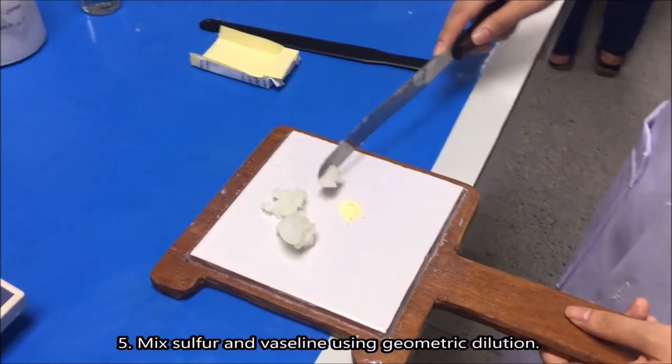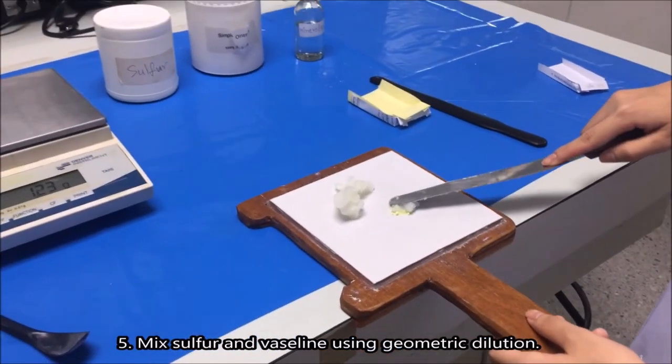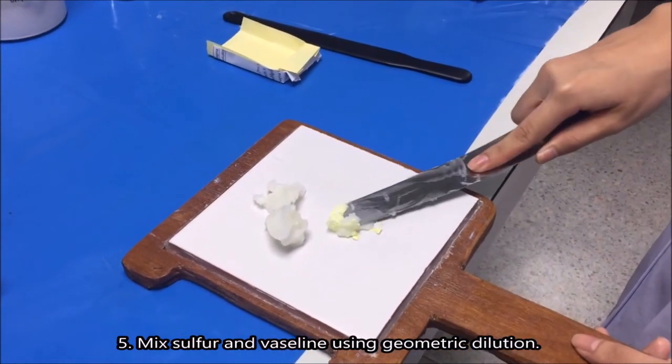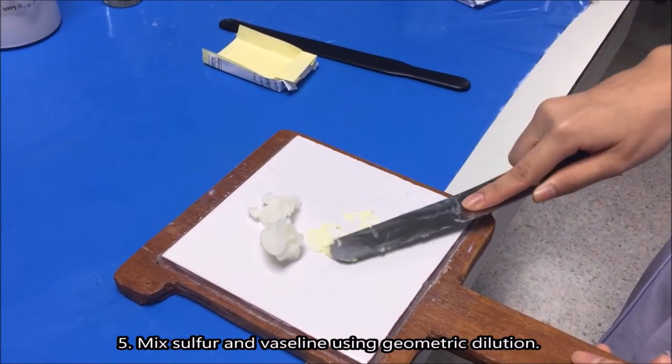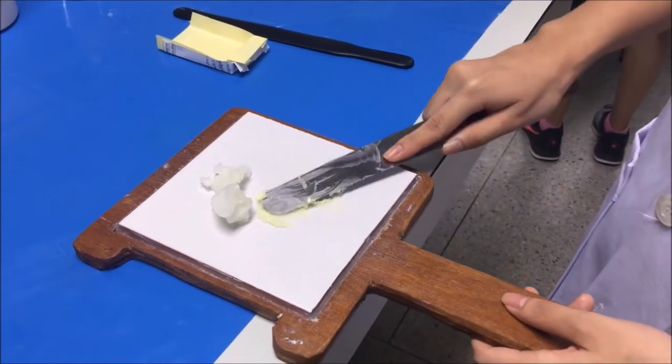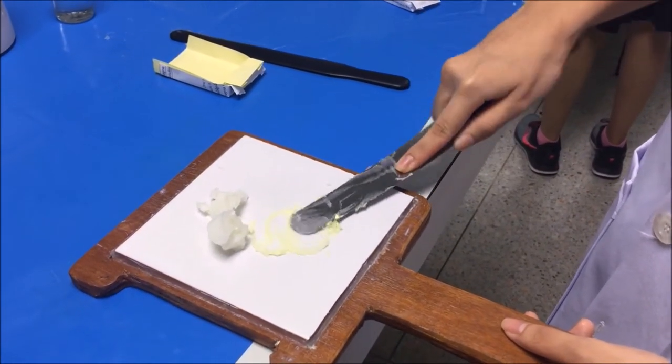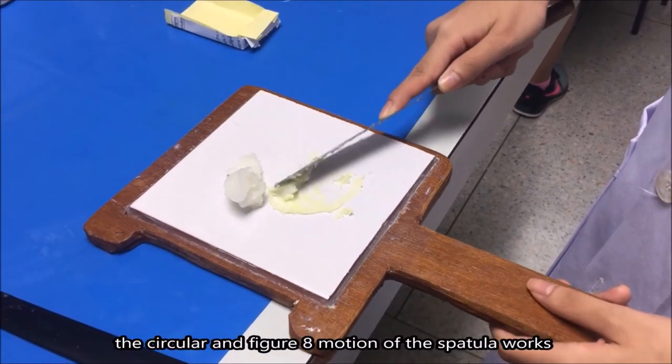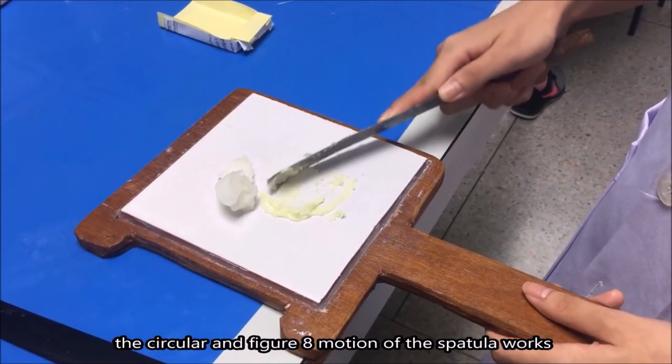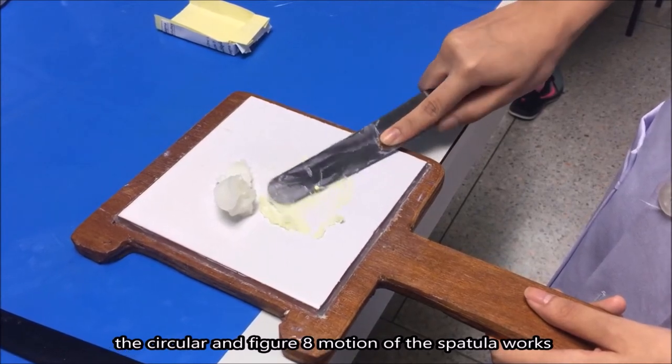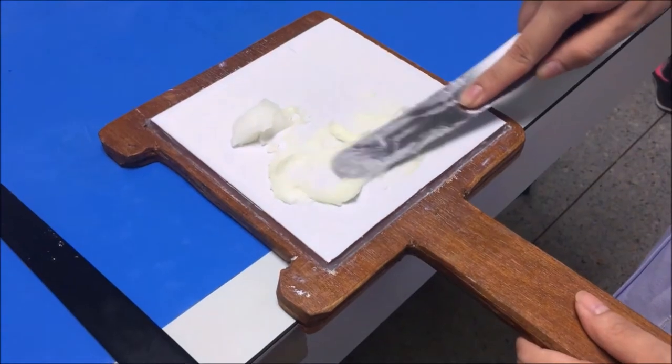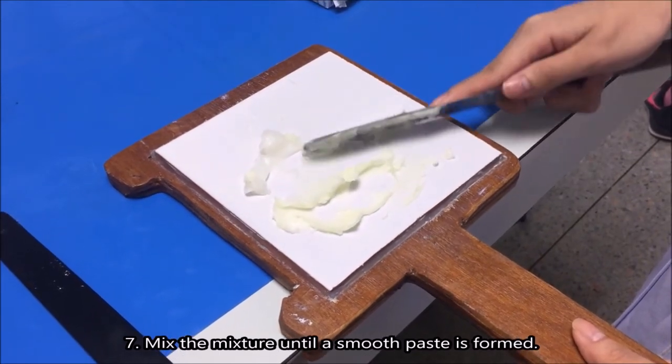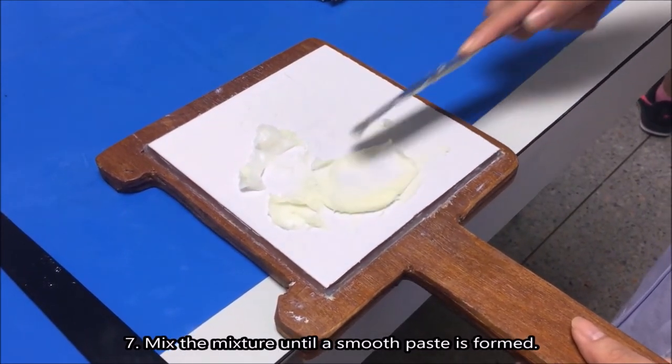Mix sulfur and vaseline using geometric dilution. When using a slab and spatula, the circular and figure-eight motion of the spatula works to both grind and mix the product. Mix the mixture until a smooth paste is formed.